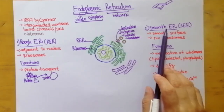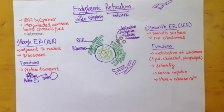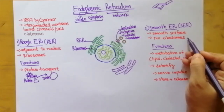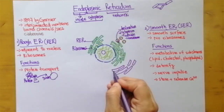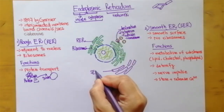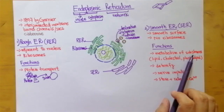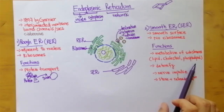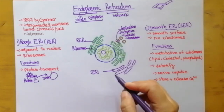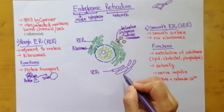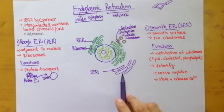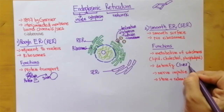The second type is smooth endoplasmic reticulum. As the name says, it has a smooth surface because it does not have any ribosomes. Smooth endoplasmic reticulum is very important because it performs a variety of functions. It is involved in the metabolism of substances, especially lipids, cholesterol, and phospholipids. The metabolism of these substances takes place inside the smooth endoplasmic reticulum.